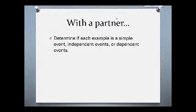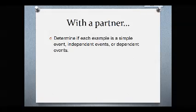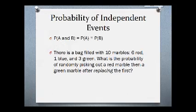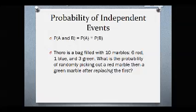You should have finished that worksheet and determined if each example is a simple event, an independent event, or a dependent event. Now we're going to talk about how you actually find the probability of the events. All I wanted you to do was put the D, S, or I in each of the boxes because that's where you needed to start. Now you actually need to talk about the probability of these events.